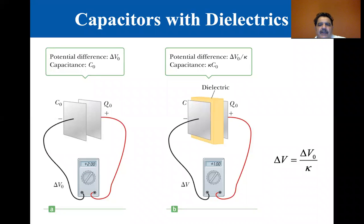Okay, we are at 16.8 capacitors with dielectrics. Let's go to the R point, and here we have a charged capacitor. Notice it's not hooked up to a battery or anything like that. It's just a charged capacitor with Delta V zero.